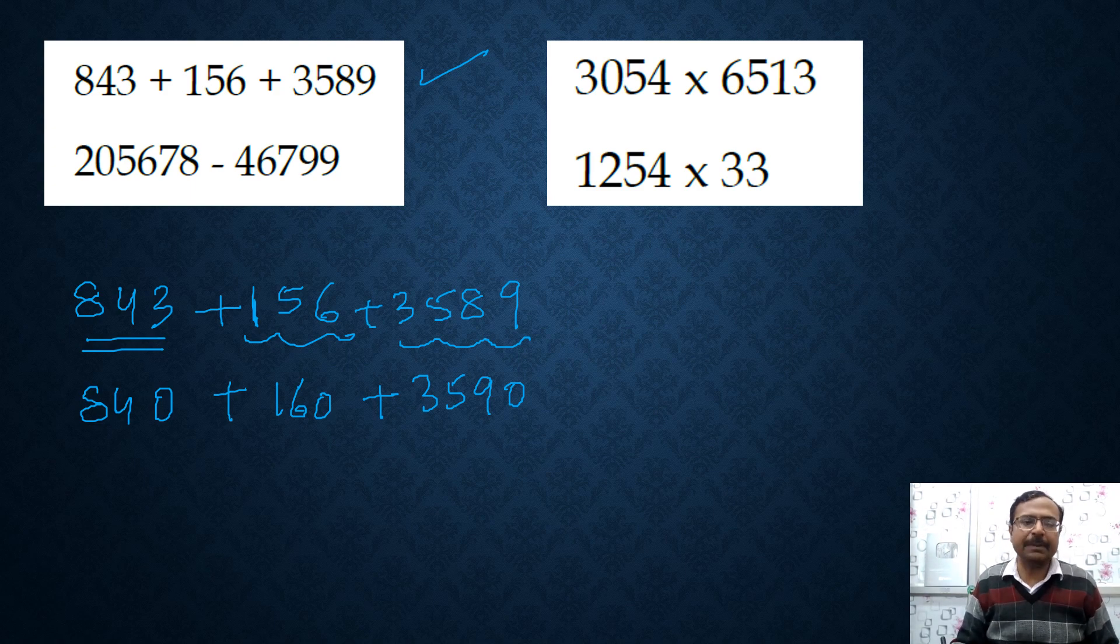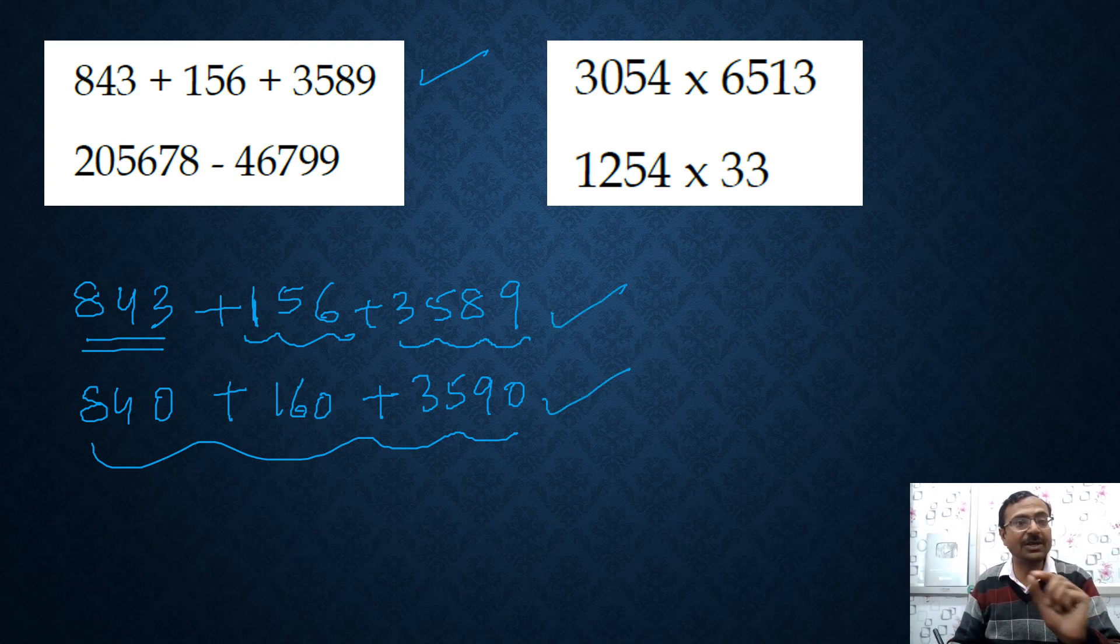So 3590 becomes the rough estimate of this sum. So approximately my answer is going to be the sum of these numbers. Now, adding these and adding these, it makes a huge difference because you have 0 at the end. Now I am not going to add these to tell you the final answer. My objective is to tell you how to round it off to nearest 10s.